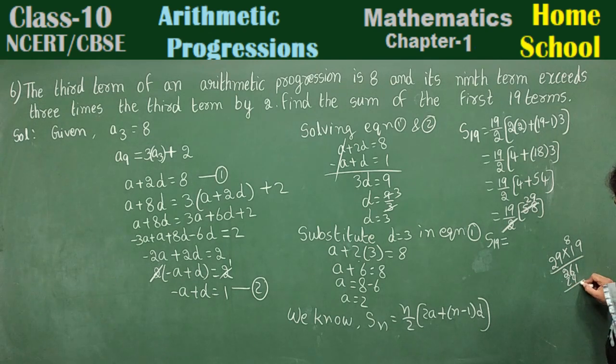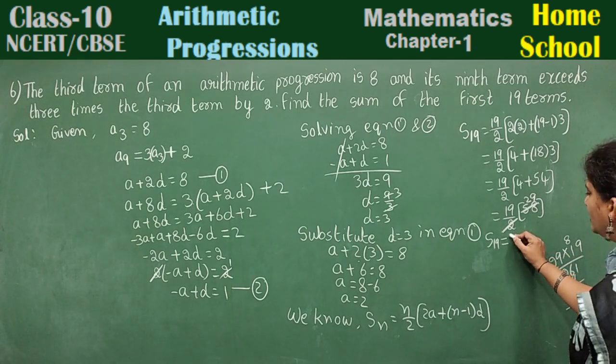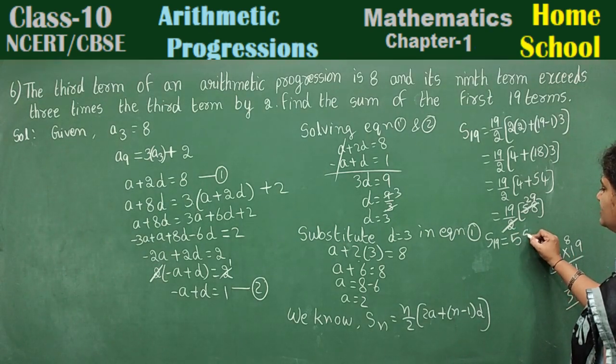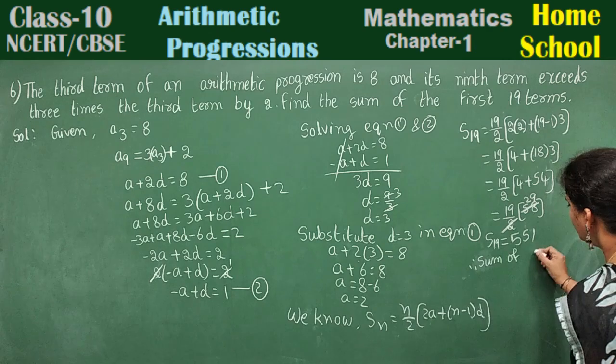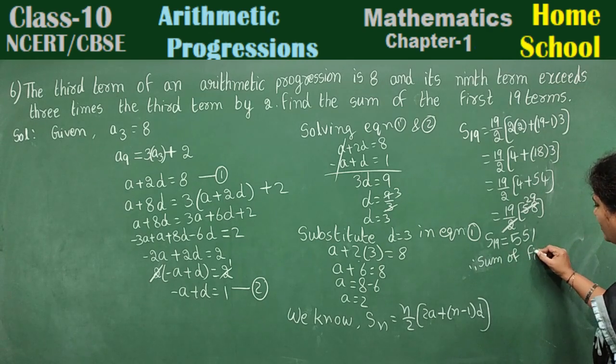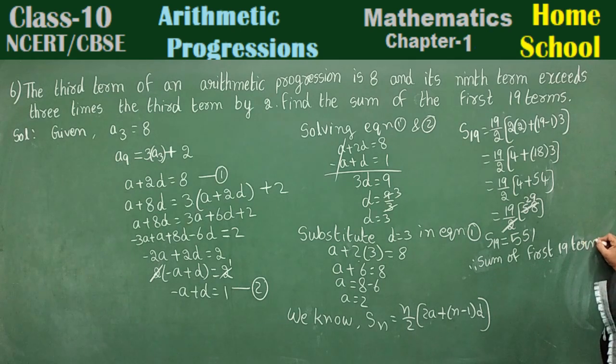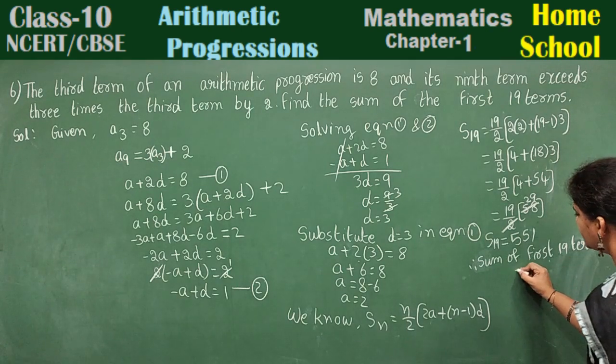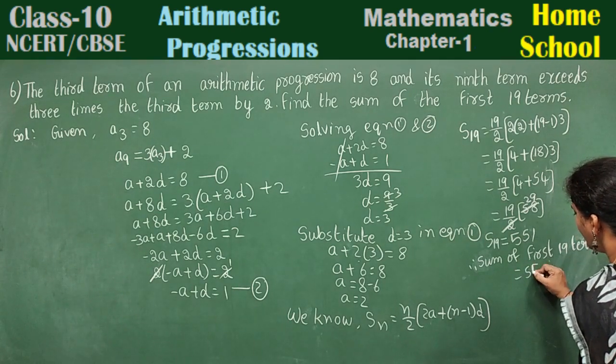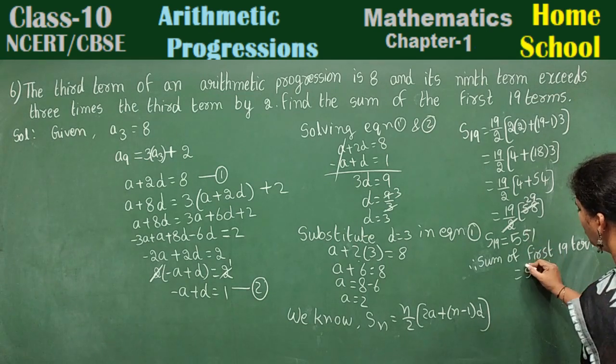19 times 29. 9 times 9 is 81, 9 times 2 is 18. 551. Therefore, what's your final answer? 551. Therefore, sum of first 19 terms is equal to 551.